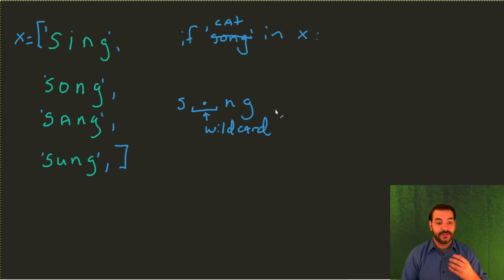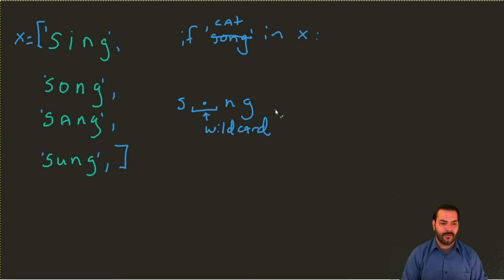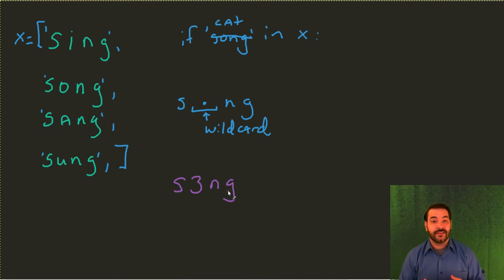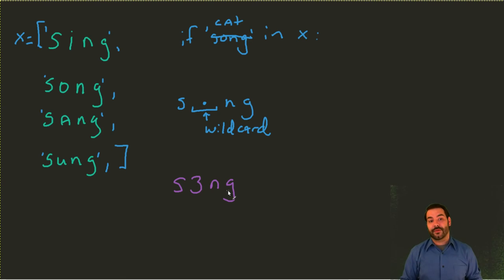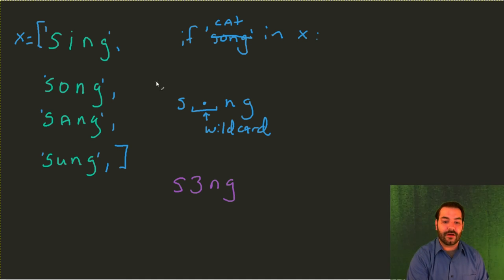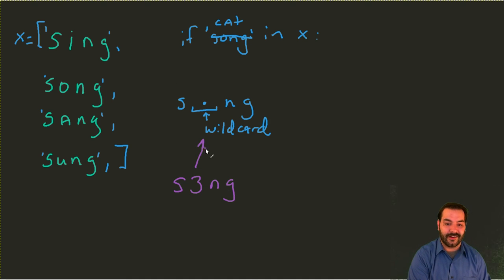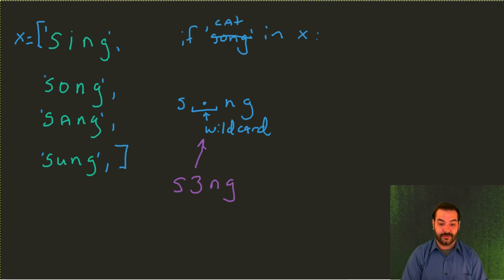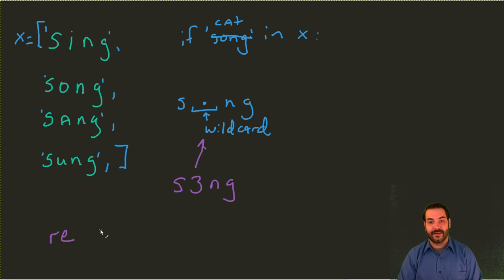So in our case, 'sing' works, 'song' works, 'sang' works, and 'sung' works. But we do run into a slight issue: something like 'S3NG' also technically works, because even though 3 is not a letter, the wildcard does not necessarily care — it matches any one character. So how can we approach this more precisely? That is where we start to introduce the RE library inside of Python.